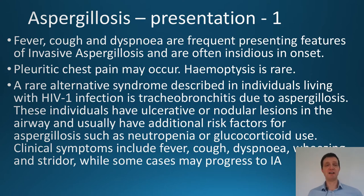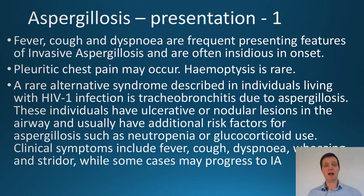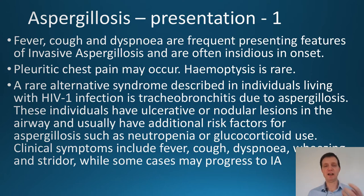There is a particular rare syndrome that people with HIV can get, and that's tracheal bronchitis due to aspergillosis. Normally you get ulcerative nodular lesions in the airway, and individuals usually have other things going on apart from HIV and are normally on steroids as well. You can also get wheezing and stridor, and this is quite a nasty infection.